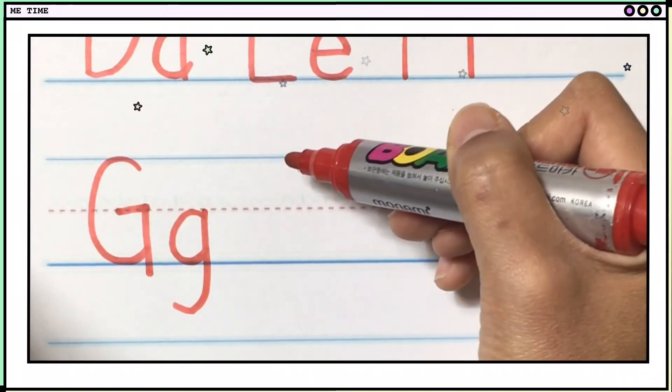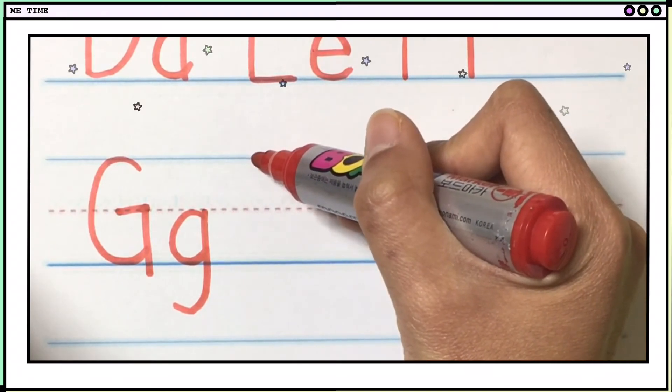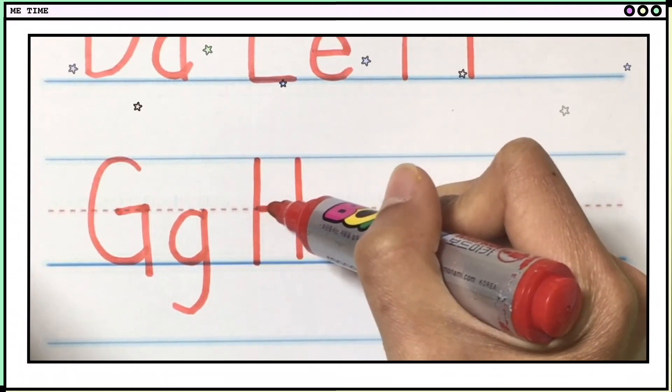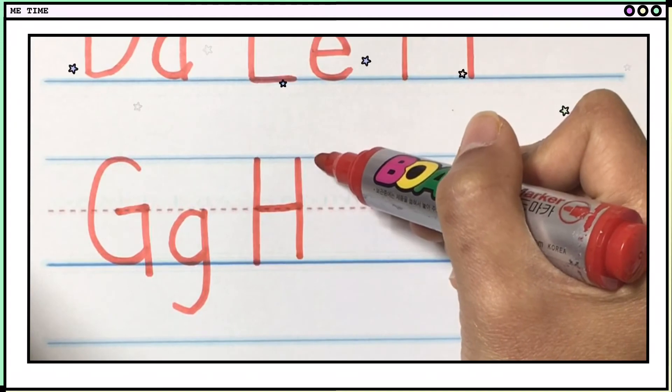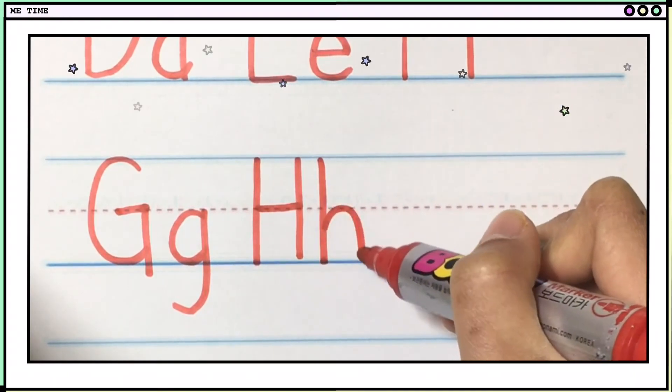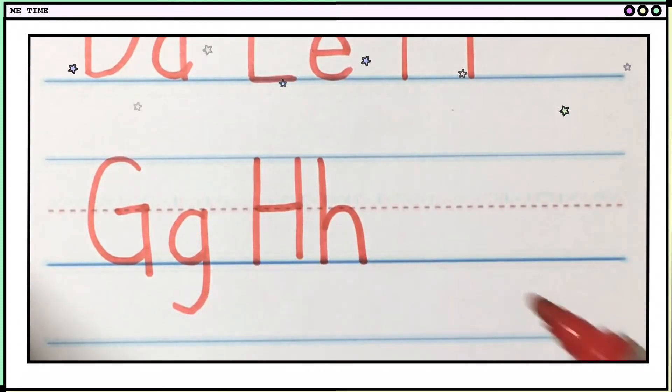Next is H. H is very easy. You need to make three lines. Two straight lines. So first, one, two, and then one cross line. Okay, and then small H, you start with one straight line, and then make a curve like this. So big G, small G, big H, small H.